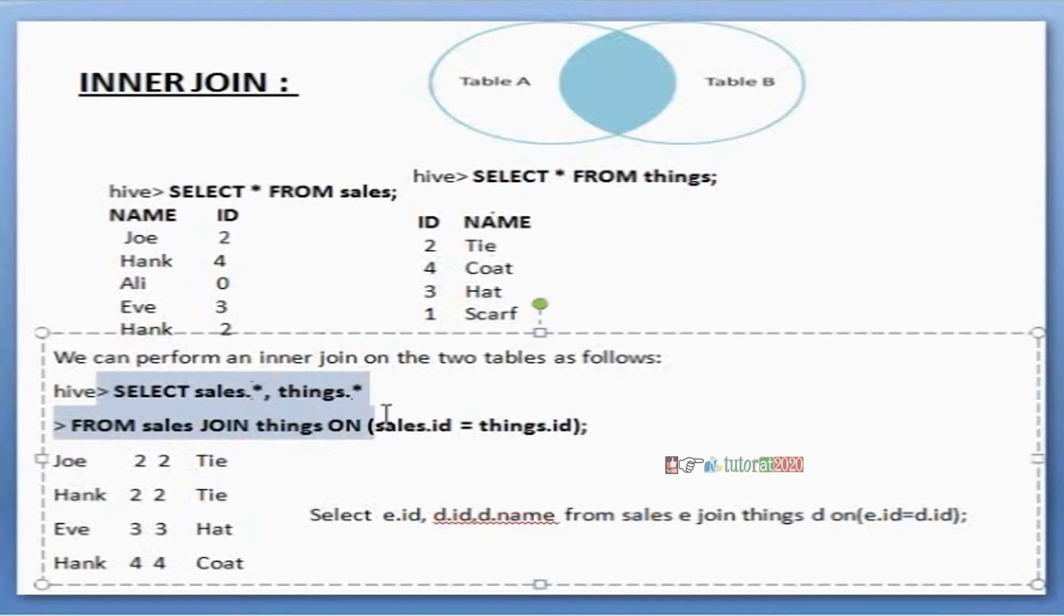Select from table name join table on the column matching. Sales.id equals things.id. Only values matching in both the tables are coming. If I don't want all the columns, I want specified columns only, we need to mention the columns individually.